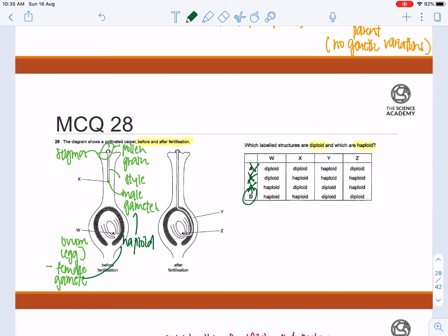Let's take a look at after fertilization. You can see that the male gametes have already fused with the egg cells. Whereas for structure Y, structure Y will be the ovary wall.